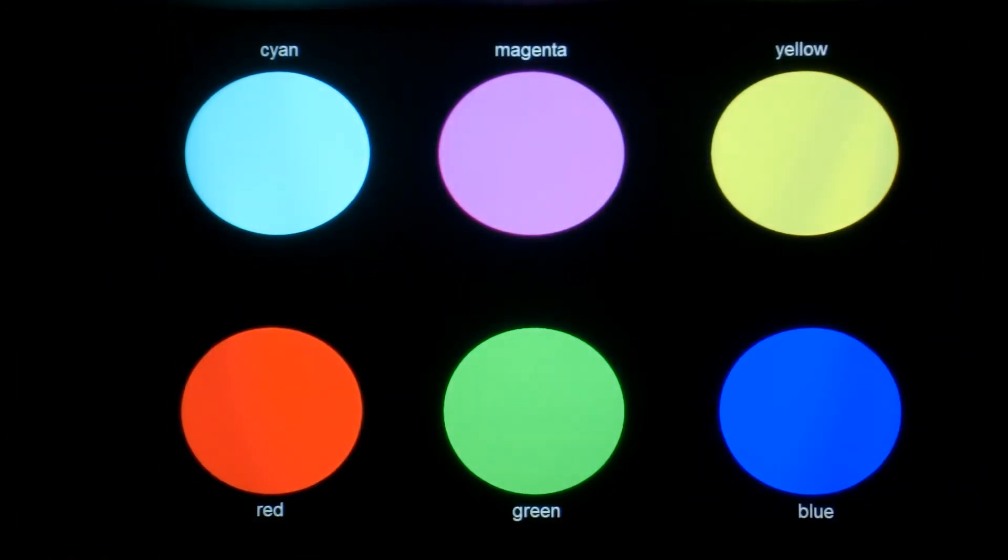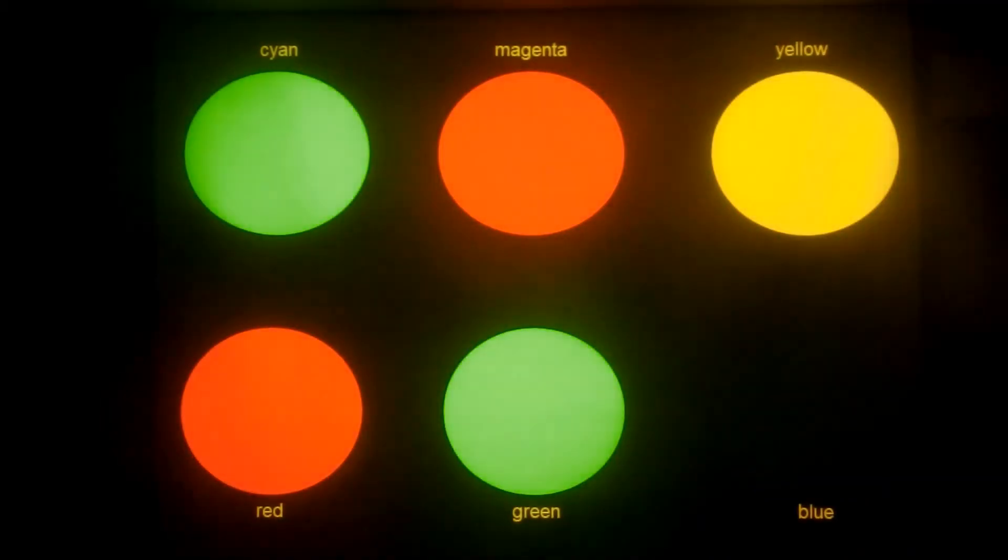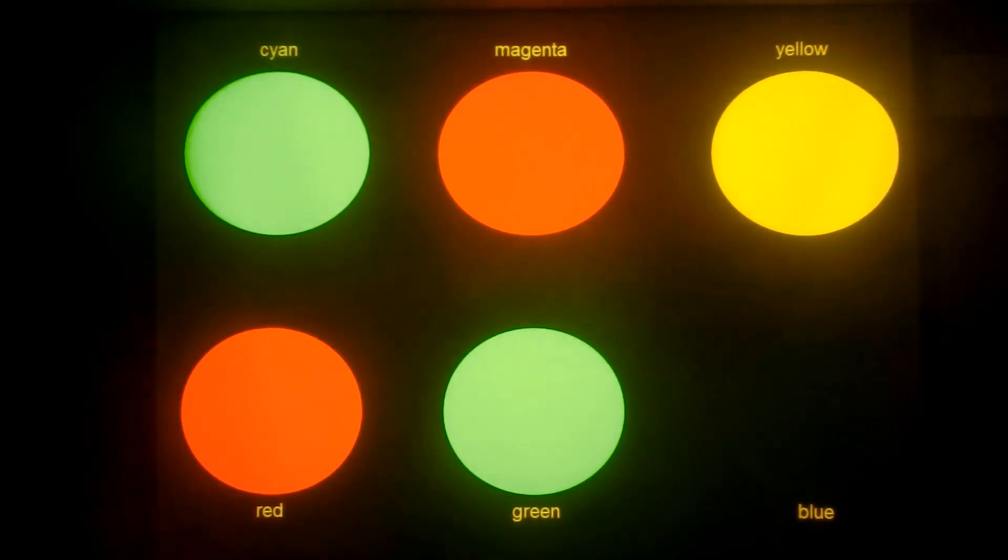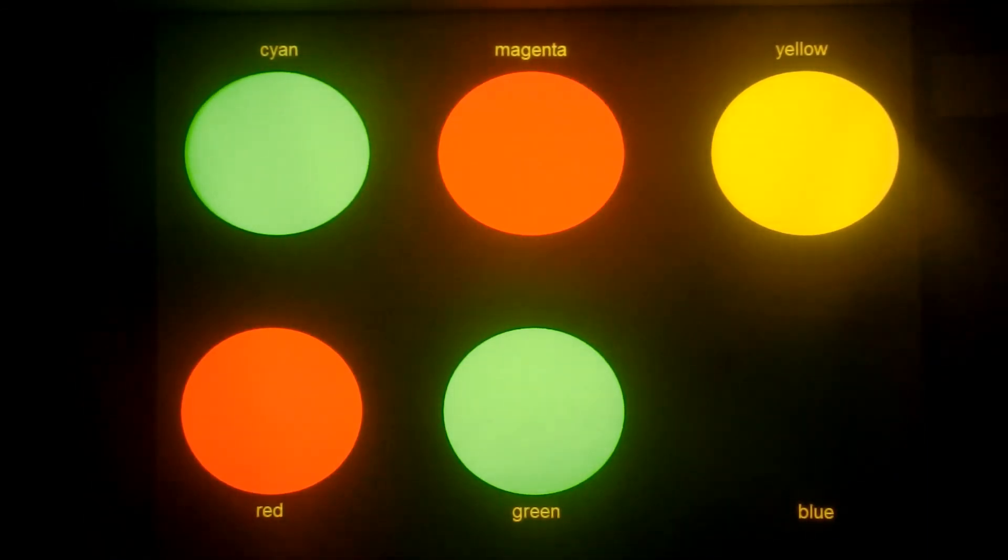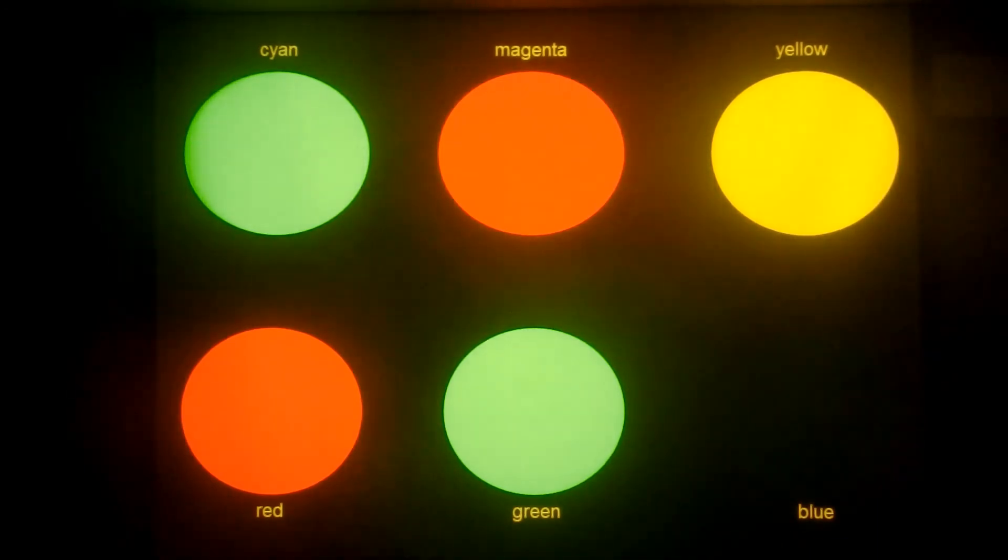The yellow filter will block out blue light, but red and green will pass through. So the red still appears red, the green appears green, but the magenta appears red, the cyan appears green, yellow appears yellow, and the blue disappears.